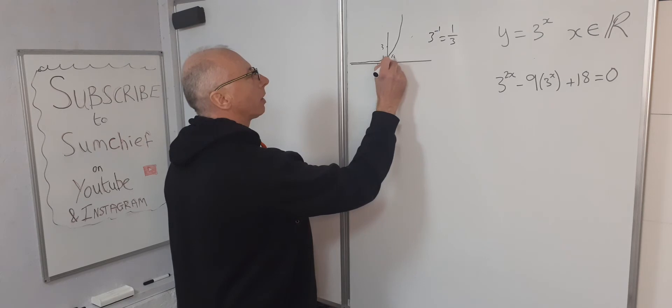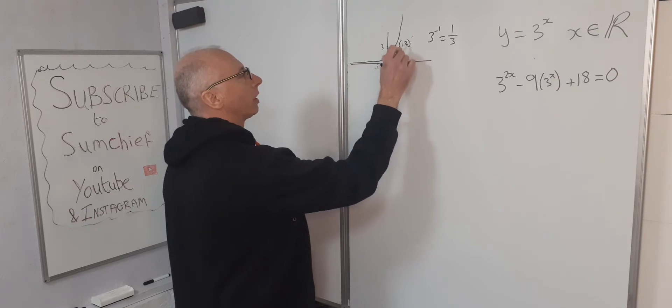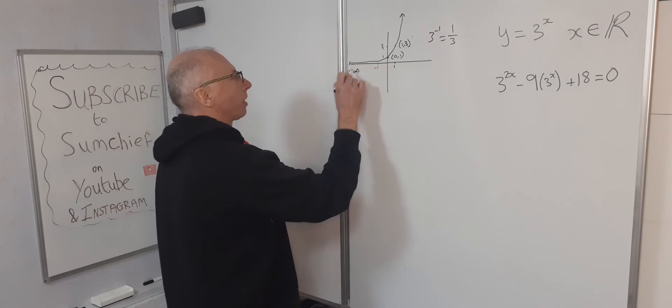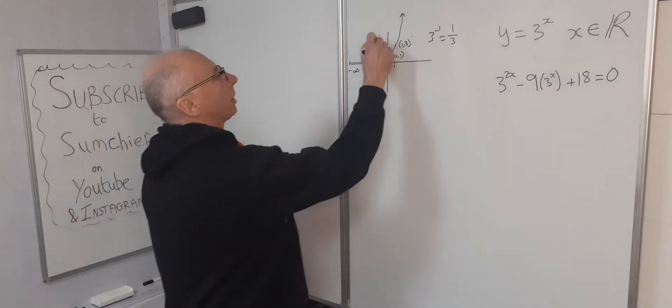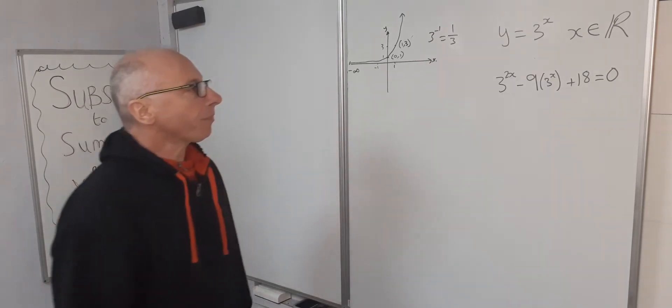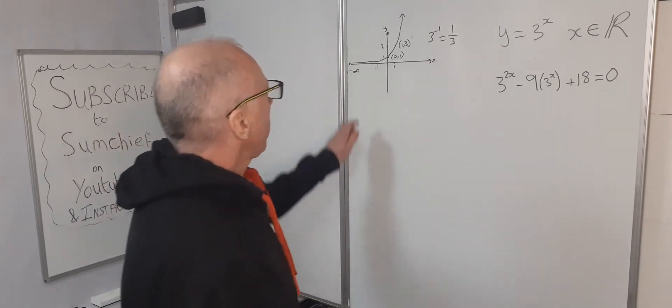Where this bit here is 0, 1 and this bit here is 1, 3 and that goes off to infinity. That approaches negative infinity down this way. So let's put the y and this is our x. Okay, so that takes care of the graph.